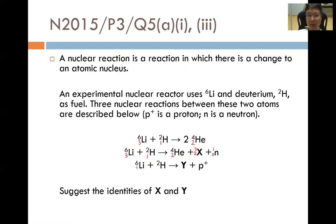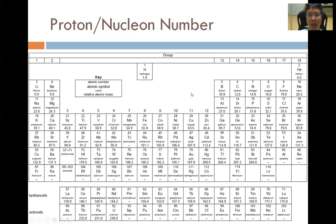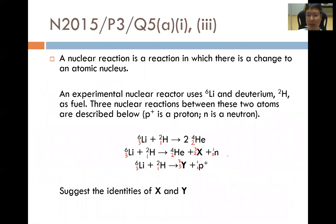Looking at the last case for Y: lithium has 3 protons and the proton has 1 nucleon and proton number 1. So 6 plus 2 is 8, 8 minus 1 is 7 nucleons; and 3 plus 1 is 4, 4 minus 1 is 3 protons. So X has a proton number of 2 and a nucleon number of 3 — looking at the periodic table, a proton number of 2 is helium, so X is helium-3.